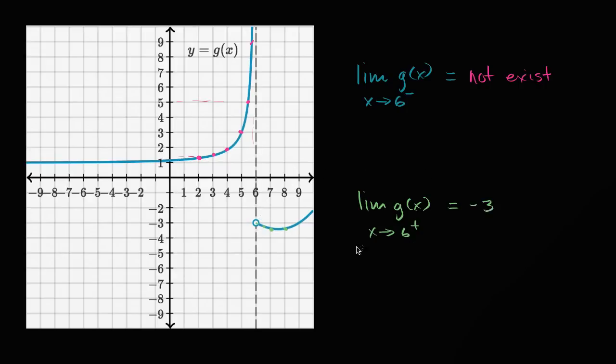So it looks like this limit right over here, at least looking at it graphically, it looks like when we approach six from the right, it looks like the function is approaching negative three, but from the left, it's just unbounded. So we'll say it doesn't exist.